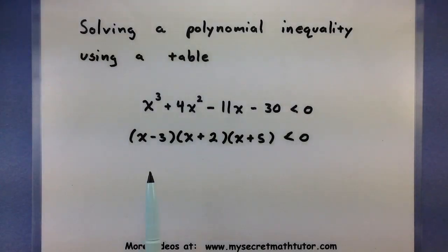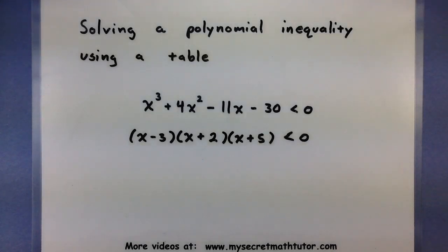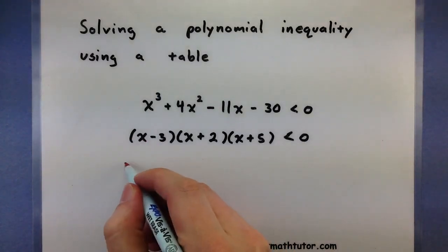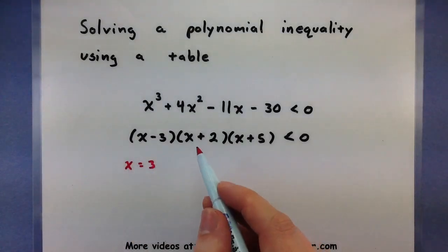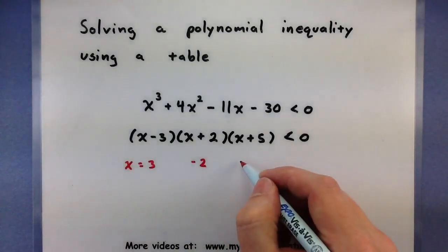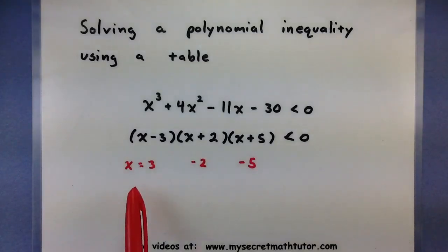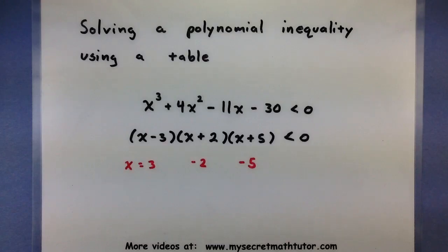Be very careful — do not take each of these factors and set them less than zero. That's not how you want to do this. Instead, let's figure out where each of these factors is equal to zero. The first factor would equal zero when x equals 3, the second one when x equals negative 2, and the last one when x equals negative 5.